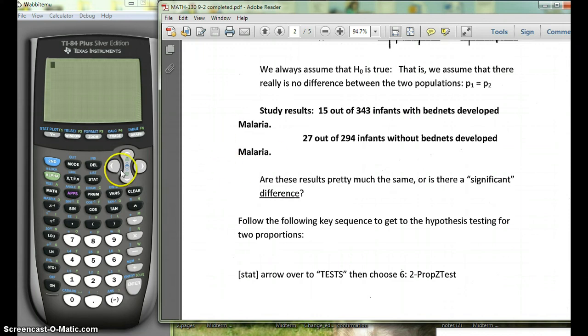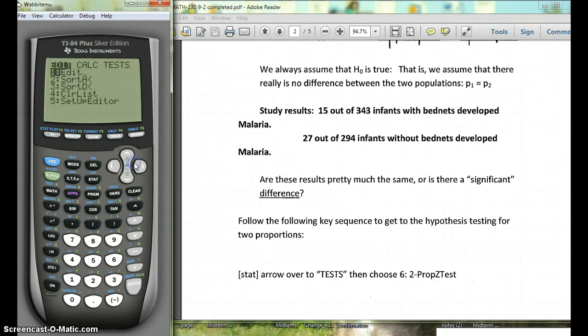So to do this on our calculator we're going to hit stat, go over to tests, and choose two prop z tests. So this is number six.